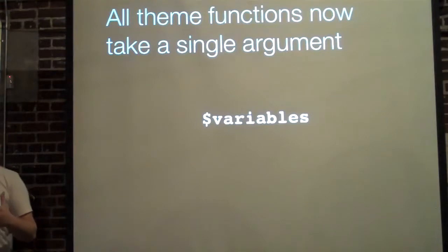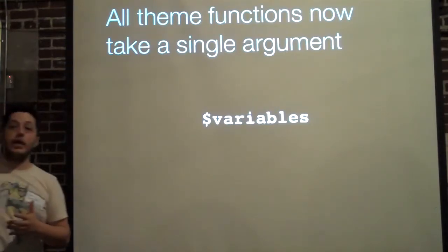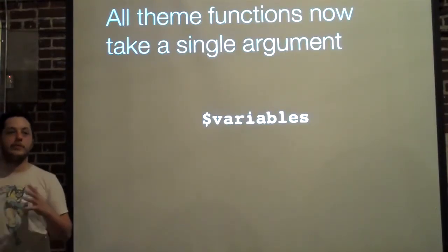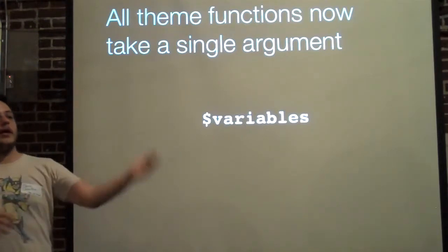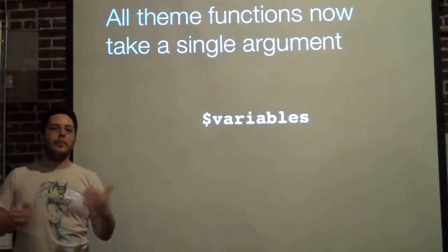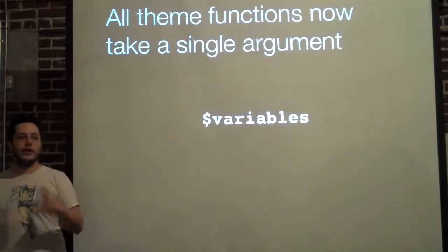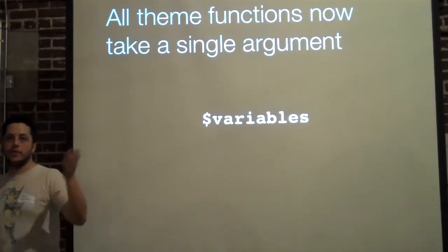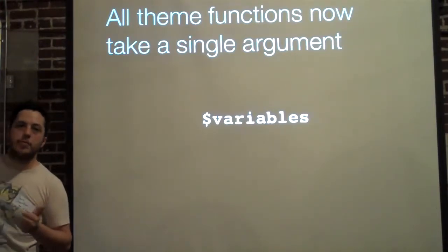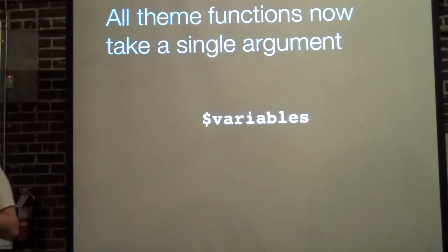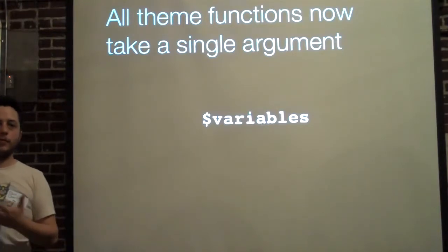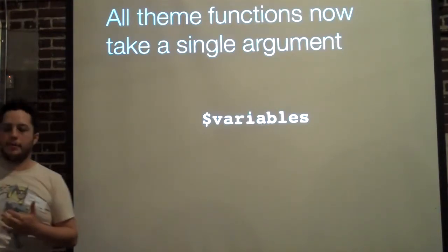If Drupal 7 wanted to add a whole new layer of complexity to how tables are themed, we'd basically lock ourselves in if we had multiple arguments. By moving to a single argument called variables, the API gets to grow and we don't have to wait for a whole new major version to come out.